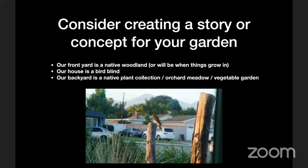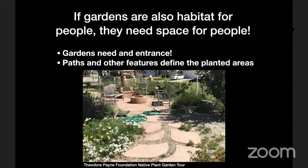Our backyard concept is a native plant collection — we're both professional horticulturists, and having a very diverse plant collection while still trying to hold it together aesthetically lets us learn more about plants every year. We also have a lot of fruit trees, but the understory of those is a native meadow where native plants compatible with the fruit trees extend habitat and bloom season in the summer. We also have vegetable gardening areas. And remember: gardens are habitat for people too, so they need space for people. Gardens need an entrance, you want to be able to get in there and walk around, and paths and other features can help define planted areas. Remember to give yourself a space to sit and observe your garden.